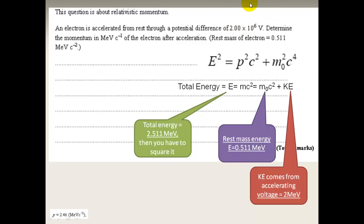So you know what E is, you know what m0 squared c4 is because this is the rest mass energy squared, and then you can work out the momentum.